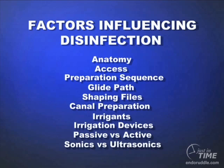Passive instruments are more like radial landed instruments. All the early files — Profiles, GT, GTX, Quantec, and K3s — were radial landed, first-generation files. Compare that with active blades like ProTaper, Brasseler Sequence, and Hero. Active instruments cut cleaner and don't tend to burnish debris into the tubules and eccentricities off the rounder parts of canals.